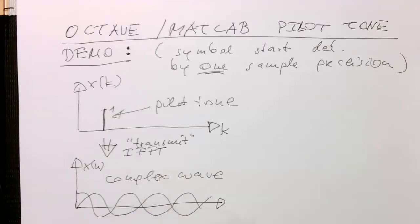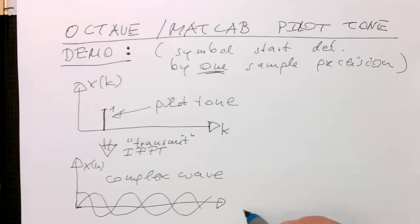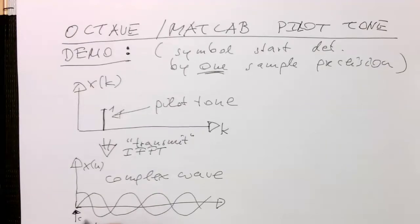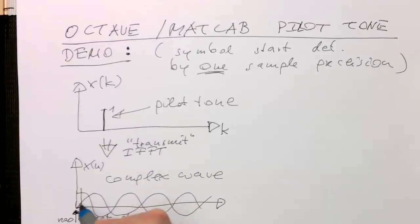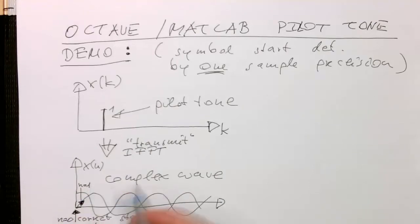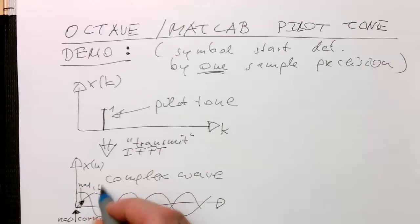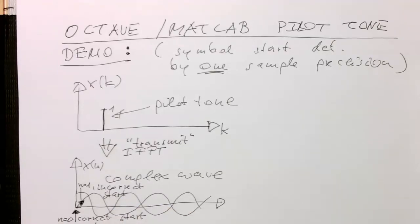So now what we do is we are doing the Fourier transform of that with two different start points. So our start number one is exactly here where we would do it. That's a correct start, right there at n equals 0. And then let's do and start here just by one sample off. So we start here at n equals 1. And that's our incorrect start.